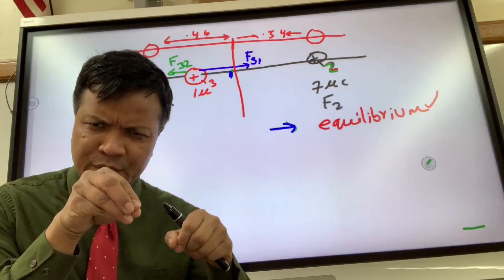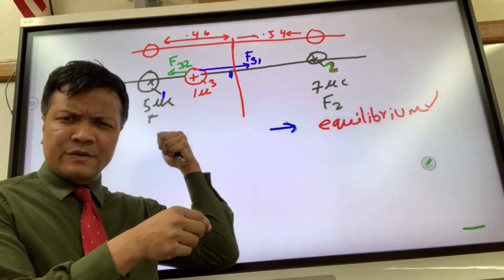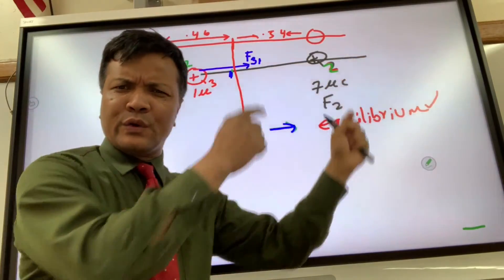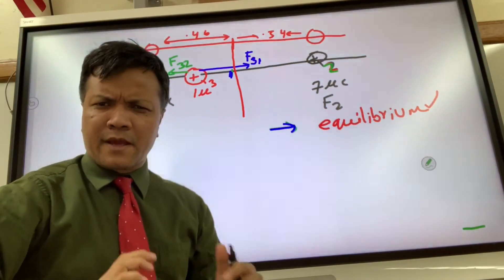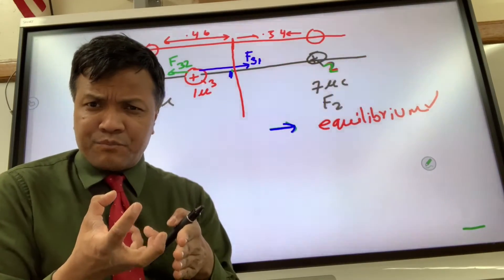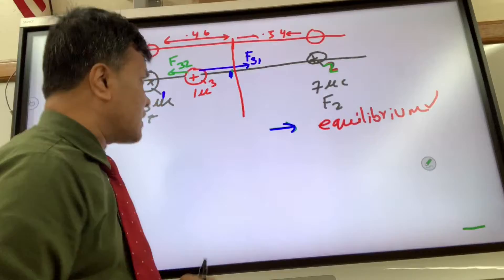So let's see where do we have to put this q3. Whether it is to the left, or between the 5 and negative 5 and 7, or to the right, in order so that the q3 will experience equilibrium. So let's take a look.